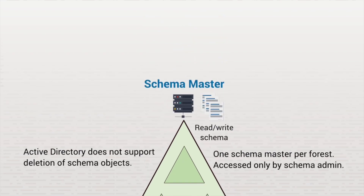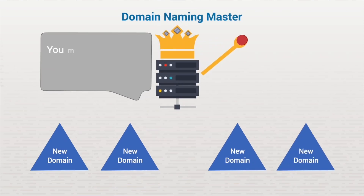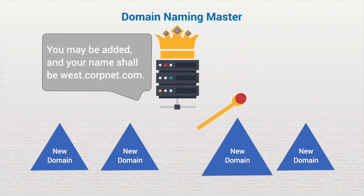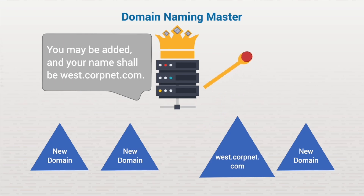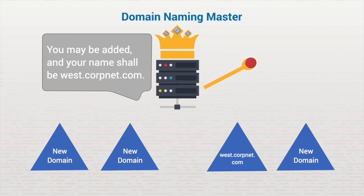Next, we have the Domain Naming Master domain controller. Its role is to name each domain in the forest with a unique name. No two domains can have the same name. Unique names are so critical to the network working properly that it can be done only by the Domain Naming Master domain controller. This Domain Naming Master is also the only DC that can add or remove domains from the Active Directory.